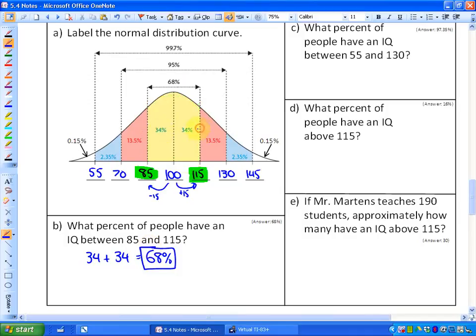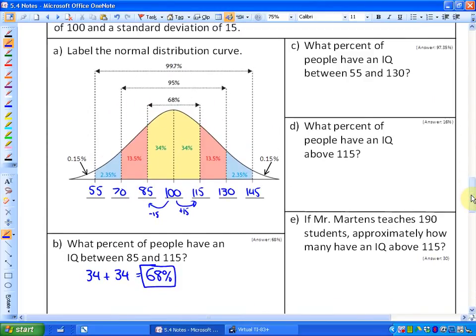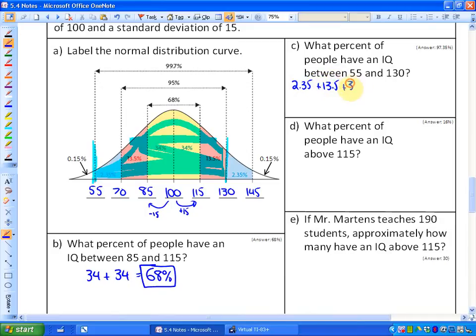Part C says what percent of people have an IQ between 55 and 130? So after you've labeled this, it becomes quite easy to visualize. So here is an IQ of 55, here is an IQ of 130. So the data between those is all of these regions here. So if we just add them up, we'll have 2.35% as our first section there, plus 13.5%, plus 34, plus 34, plus 13.5%. And if you add those up, 97.35% of people would have an IQ between those values.